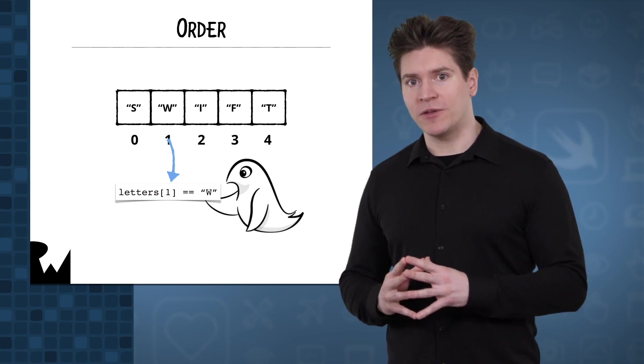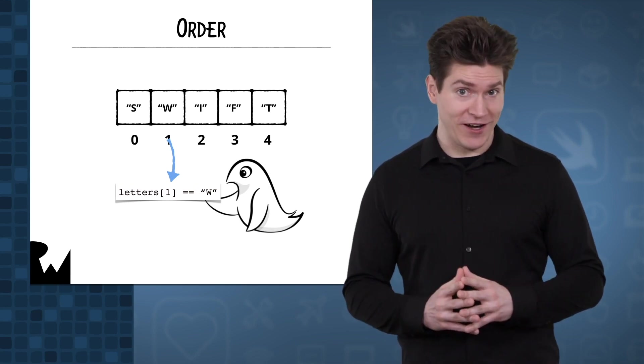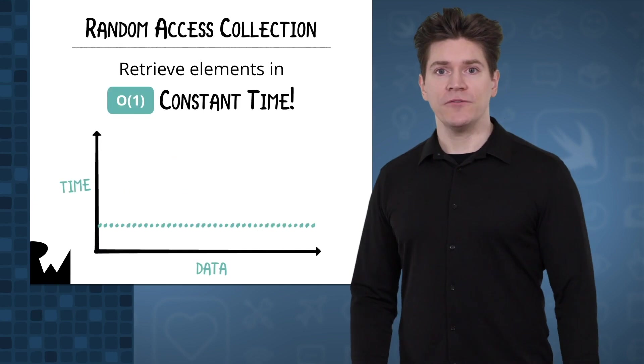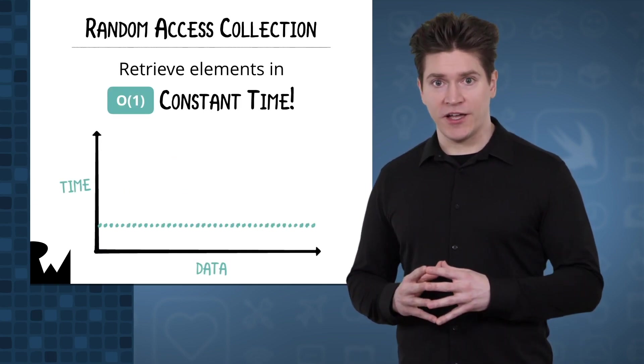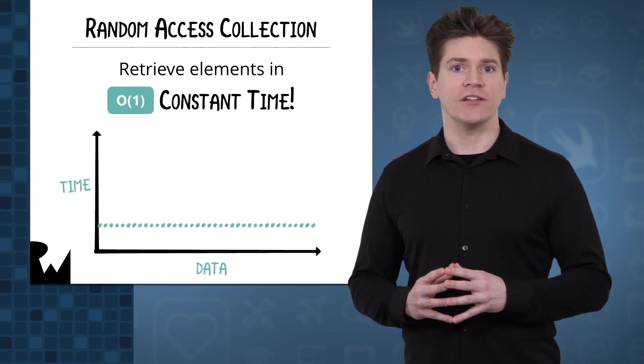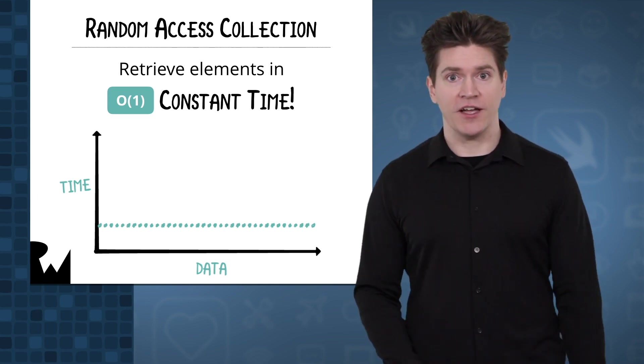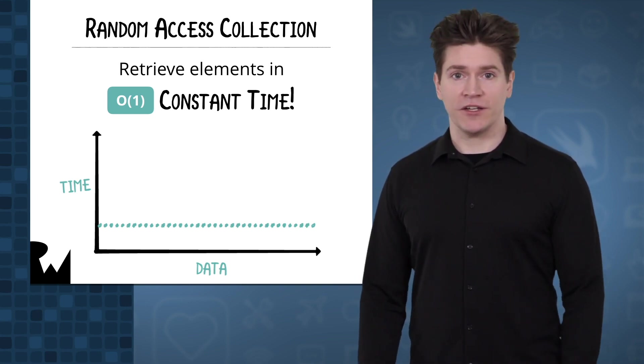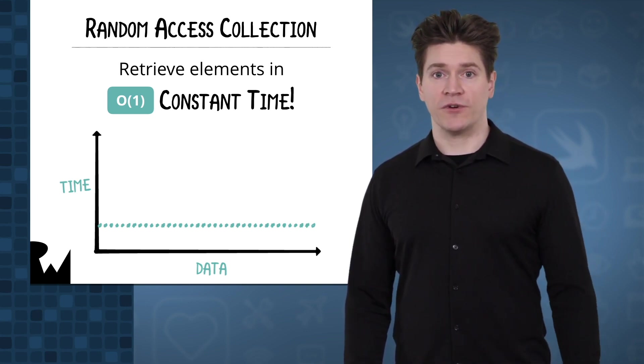That simple power to maintain order shouldn't be taken for granted. We're depending on it throughout the course. In the introduction you learned about constant time. Random access collections allow you to retrieve elements in constant time. The size of the collection is irrelevant. Not all data structures have that capability.